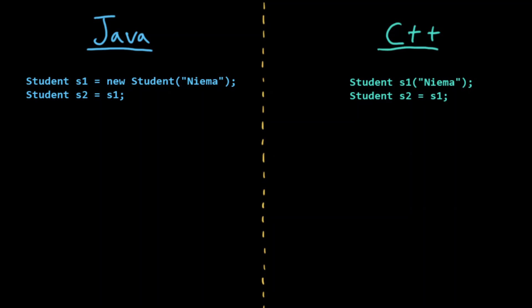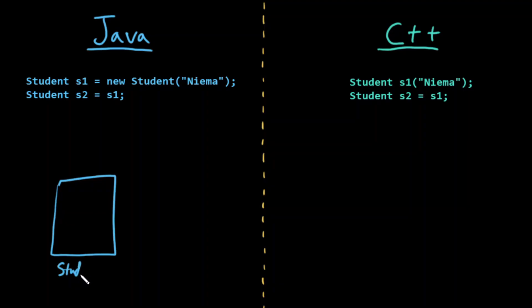Let's compare memory models between Java and C++. Imagine I have some student class that has an instance variable of type string called name. In this Java code, I'm creating a new object of type student, and it has a single instance variable, let's call it name, that's of type string.